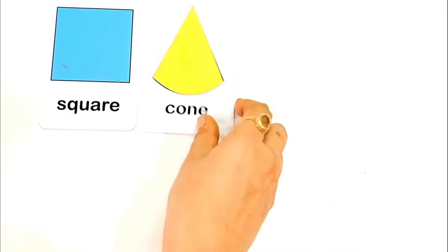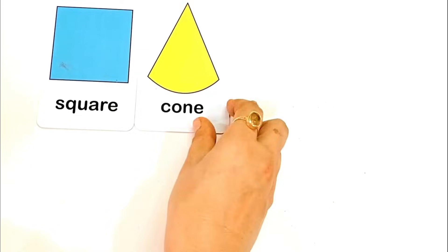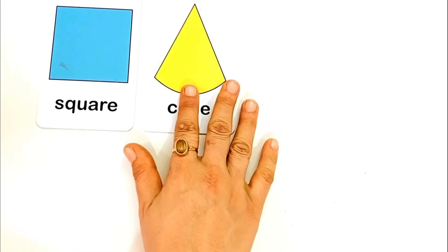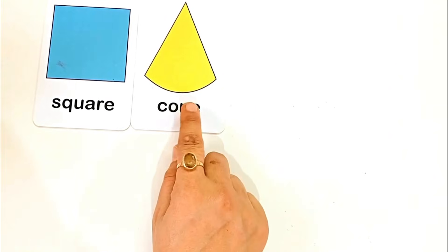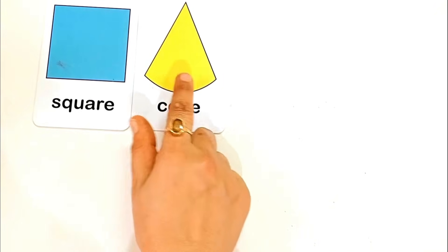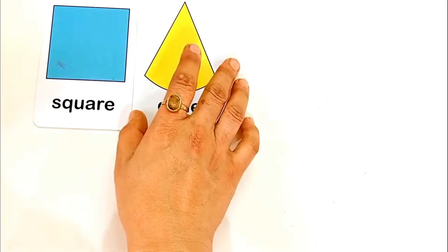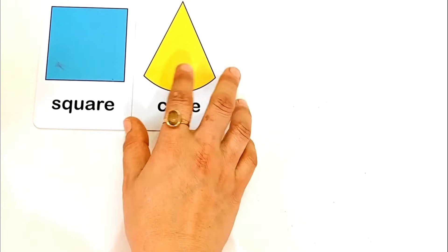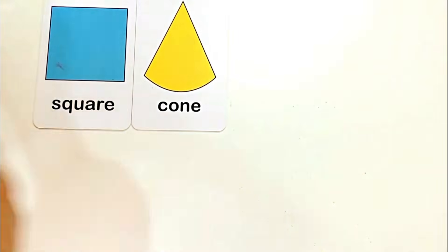C for cone. C O N E, cone. This is cone shape, and the color is yellow color.